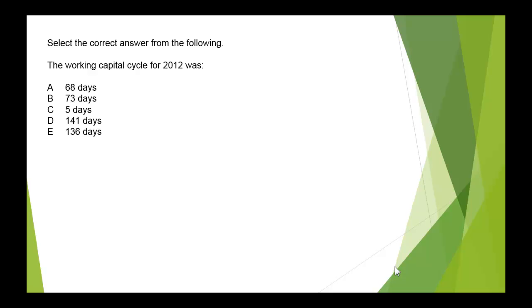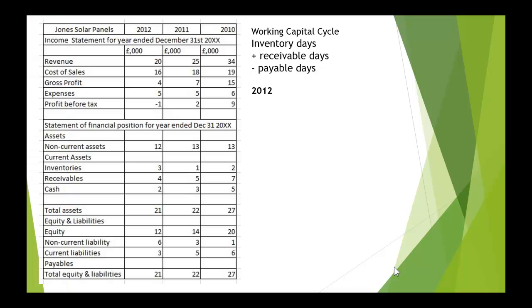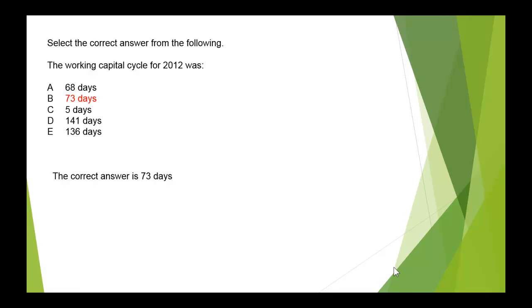Select the correct answer: the working capital cycle for 2012 was... To answer this, you need to know the working capital cycle formula: inventory days plus receivable days minus payable days. We've already worked all of these out for 2012: 68 days for inventory, 73 days for receivables, and as it happens 68 days also for payables. So 68 + 73 − 68 = 73 days, meaning the correct answer is B: 73 days.